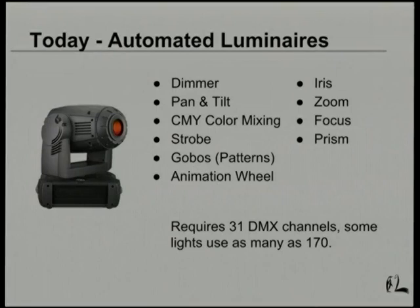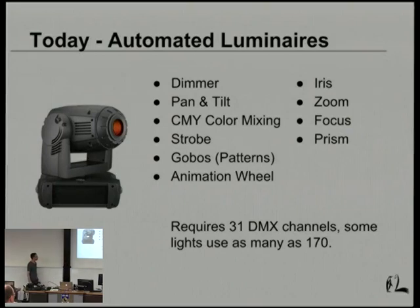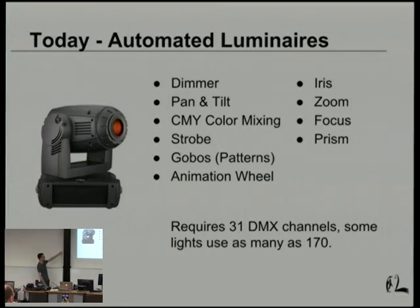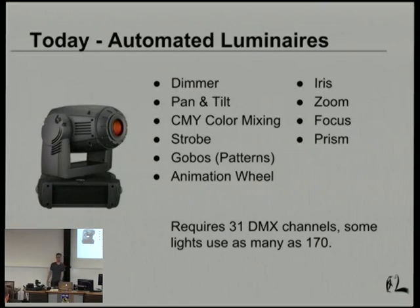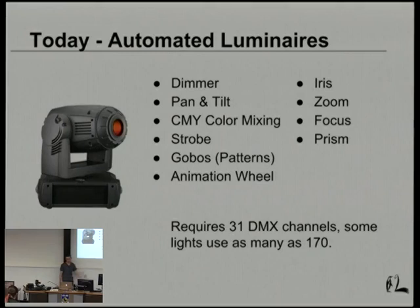That worked well when DMX was created, because everyone thought no one would have more than 512 channels. But lighting designers kept wanting more, and technology kept marching forward. Today we have mid-range automated lights like the MAC 700, with attributes like pan/tilt, CMY color mixing, strobes, animation wheels, iris, zoom, focus, and prism. This one takes 31 DMX channels to control; some high-end lights take over 170, maybe up to 210. So we've gone from analog — one conductor per light — to digital, and now back to the same problem of needing cables per light.